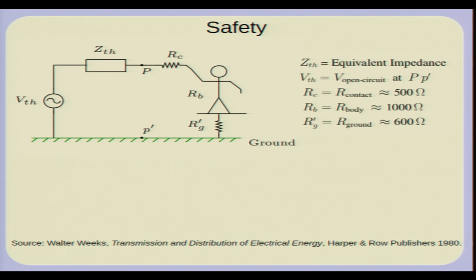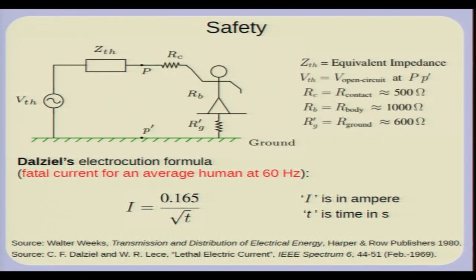When you touch a live point, some current flows through your body, which can affect your muscles and be a safety hazard. This was studied by several engineers in the 1950s and 60s. They found that the fatal current for an average human being at 60 Hz is 0.165 amperes divided by the square root of t, where t is the time in seconds for which the current flows. So for one second, 165 milliamperes can be fatal — an empirical formula reported in several publications.